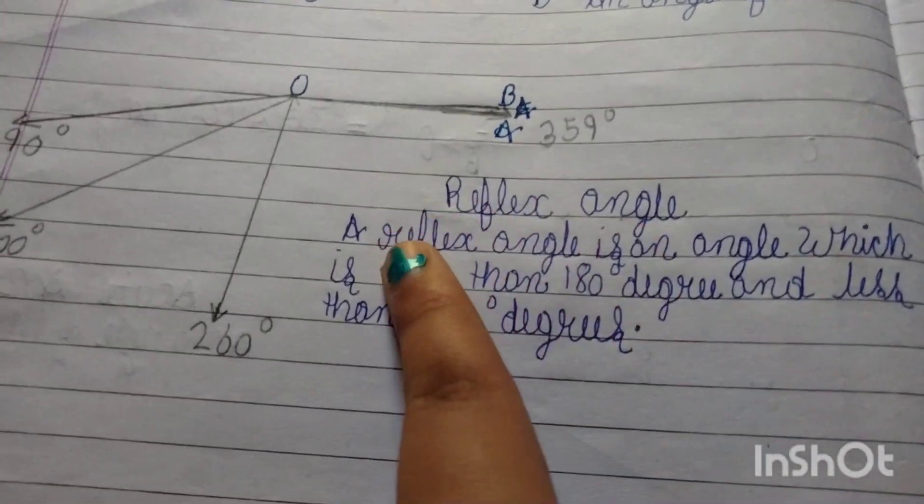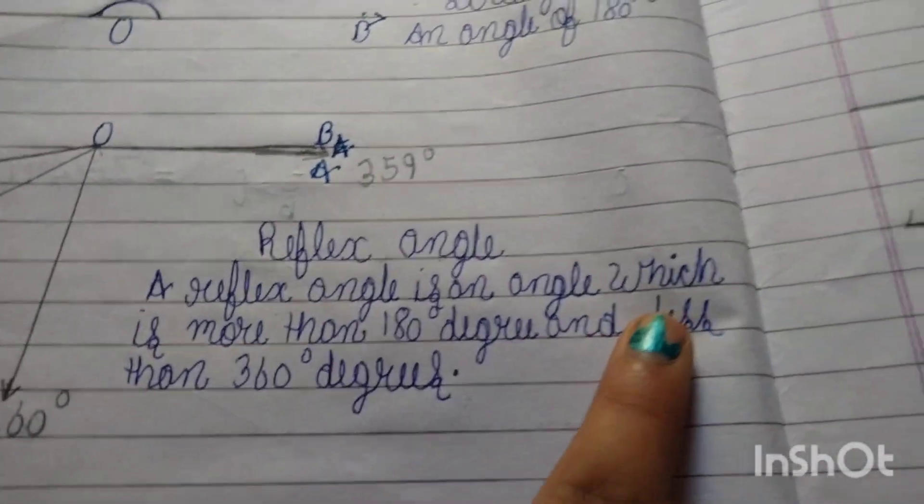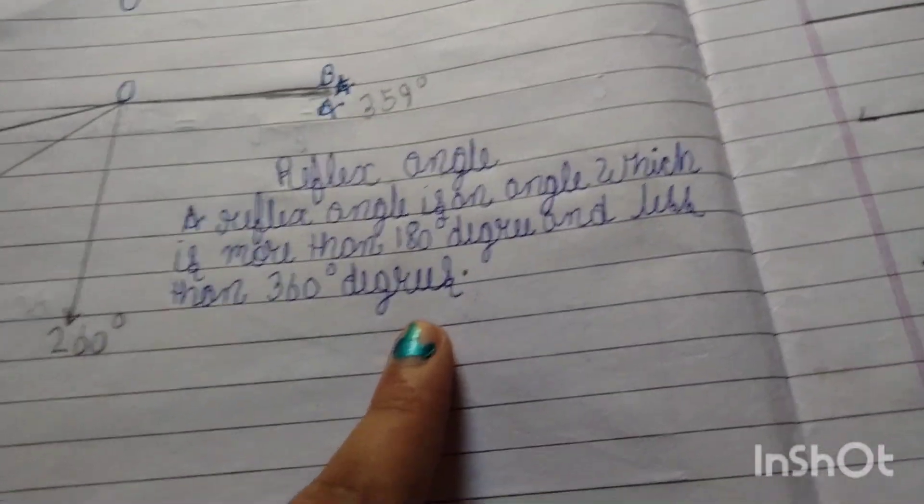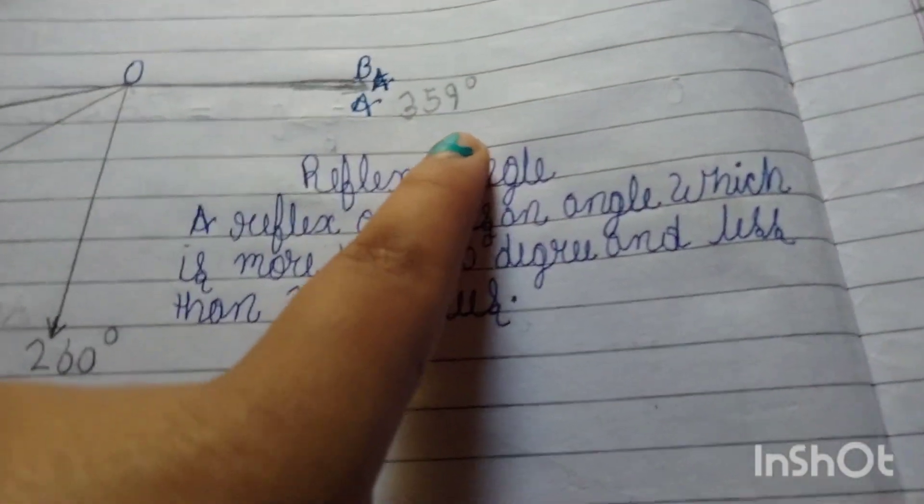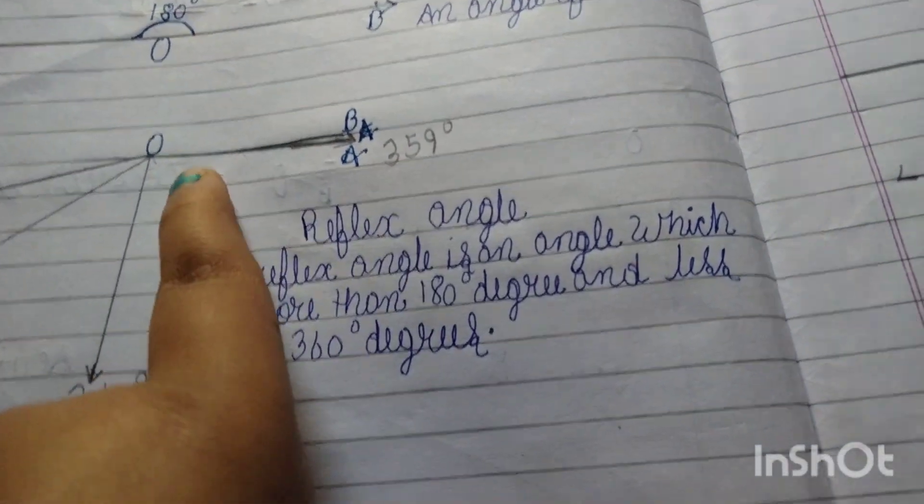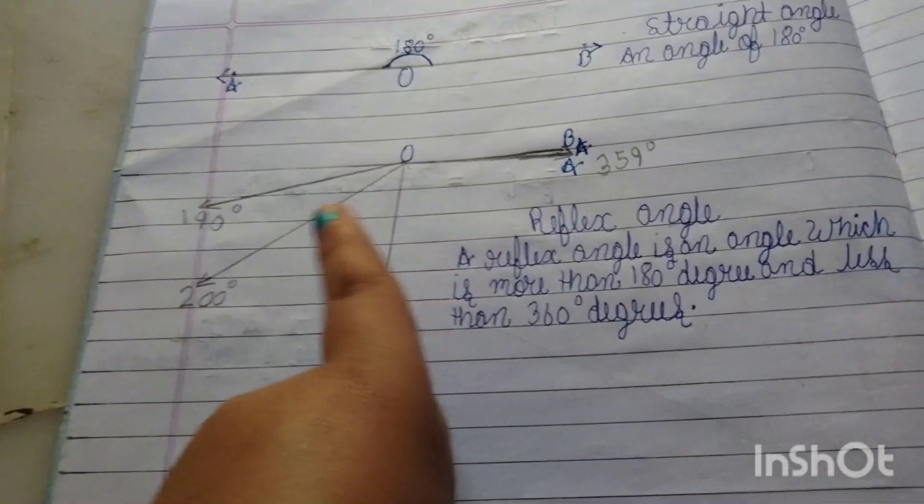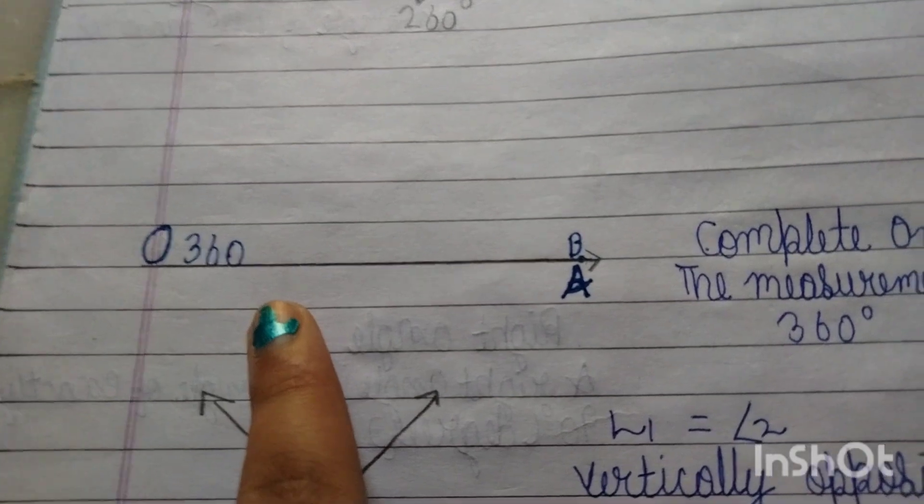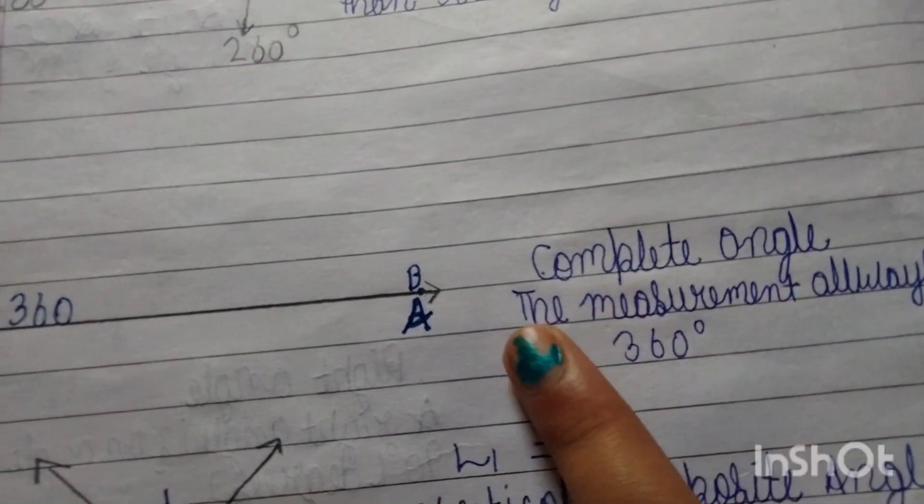Reflex Angle: A reflex angle is an angle which is more than 180 degrees and less than 360 degrees. For example, 359 degrees.